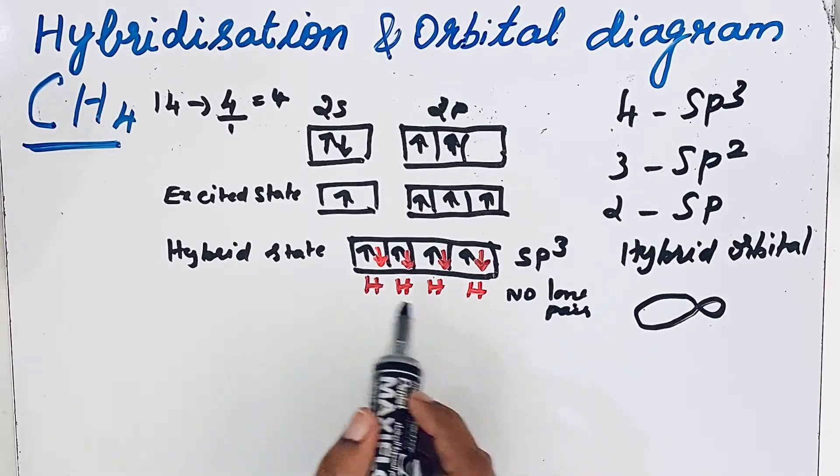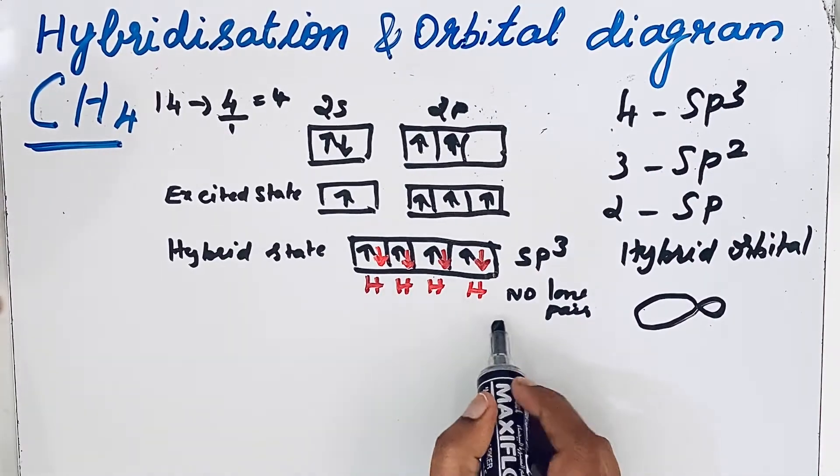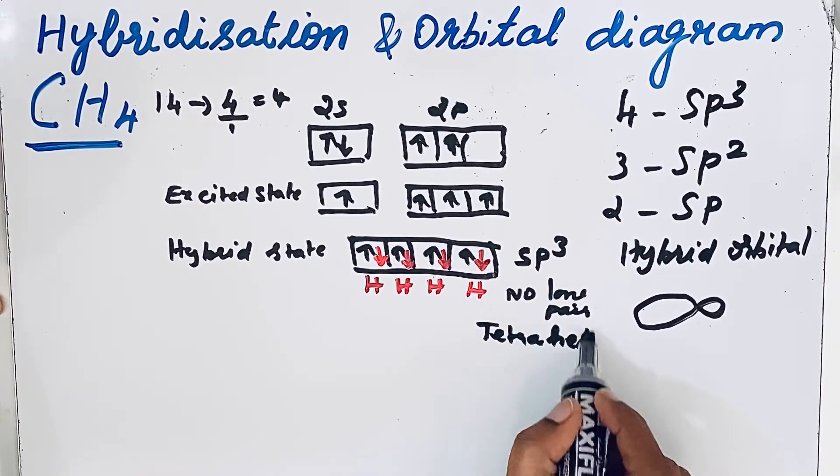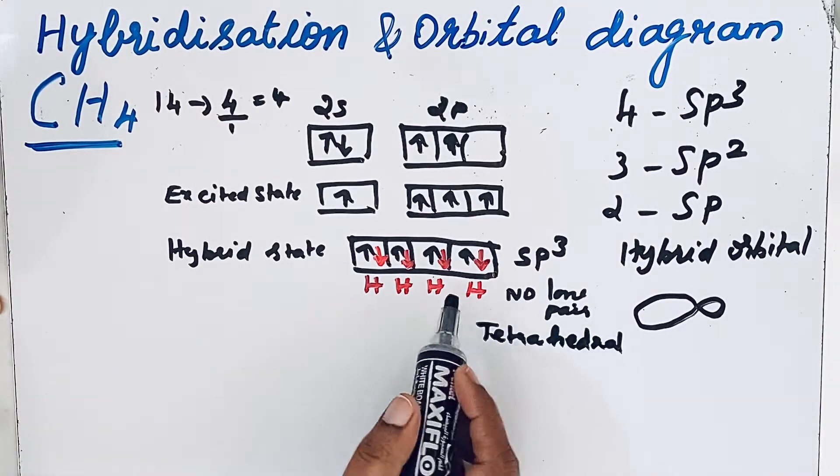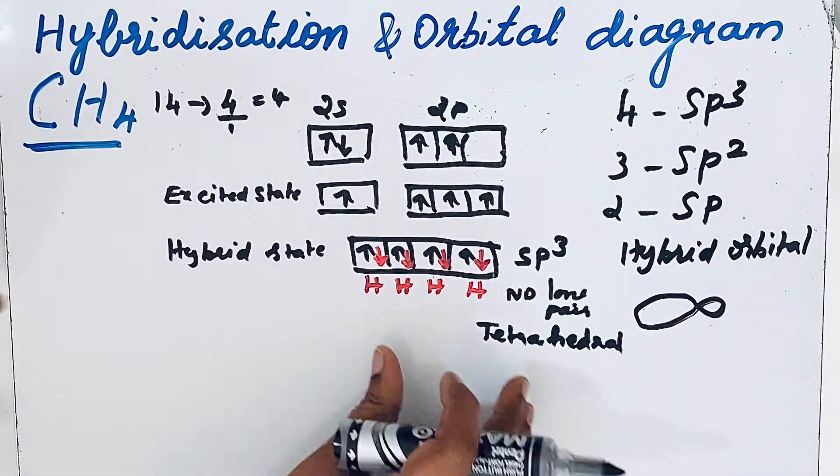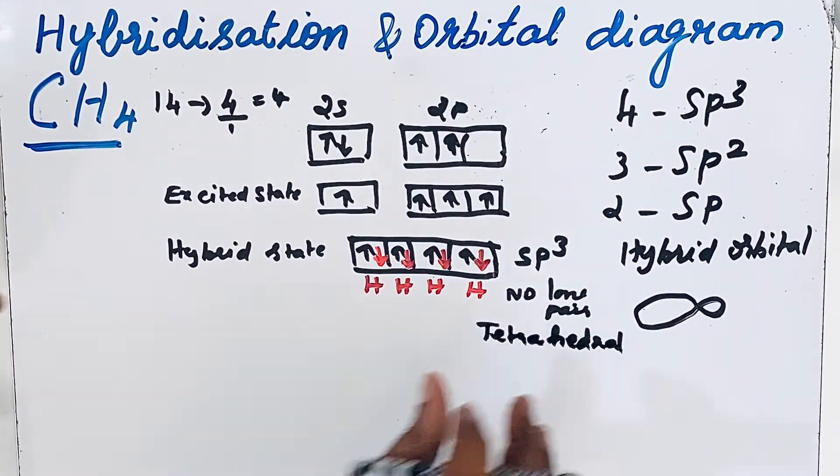Then what is the shape of this sp3 hybridization? Tetrahedral. Because of that sp3 hybridization and also not containing lone pair electrons, this CH4 will form tetrahedral shape.